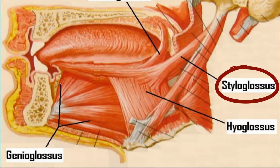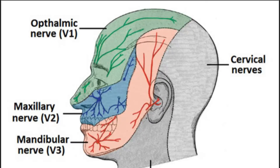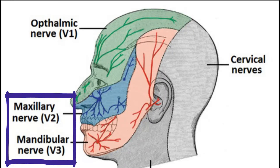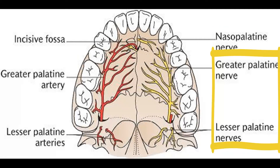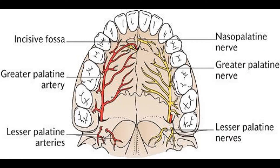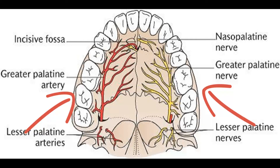Moving on to the nerve supply: you've got the maxillary nerve and the mandibular nerve, branches of the trigeminal nerve — V2 and V3. From there you've got the nasopalatine nerve, the greater and the lesser palatine nerves for the hard and soft palate. For the tongue you've got the lingual nerve, and you've got the inferior and superior alveolar nerves as well.